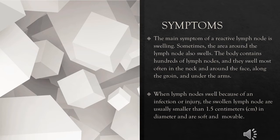The main symptoms of reactive lymphadenopathy involve swelling around the lymph node. The body contains hundreds of lymph nodes, and they swell most often in the neck and around the face, along the groin, and under the arms. When lymph nodes swell because of an infection or injury, the swollen lymph nodes are usually smaller than 1.5 cm in diameter and are soft and mobile.